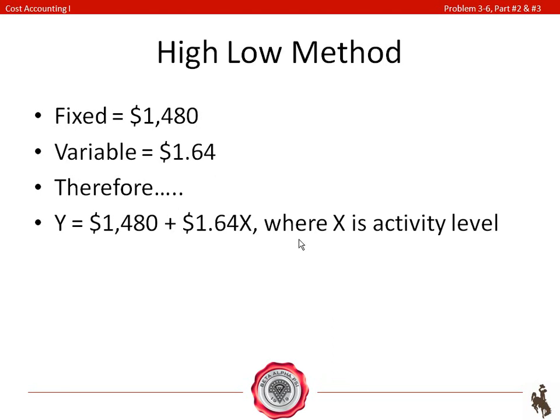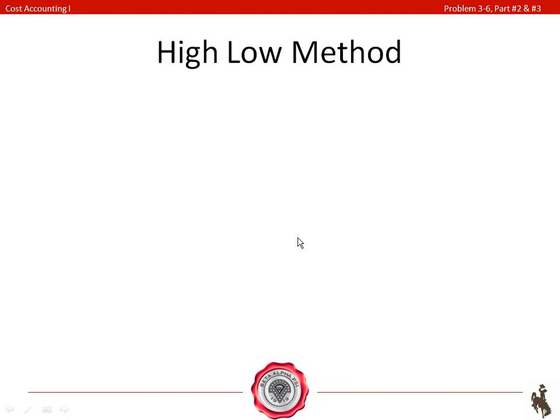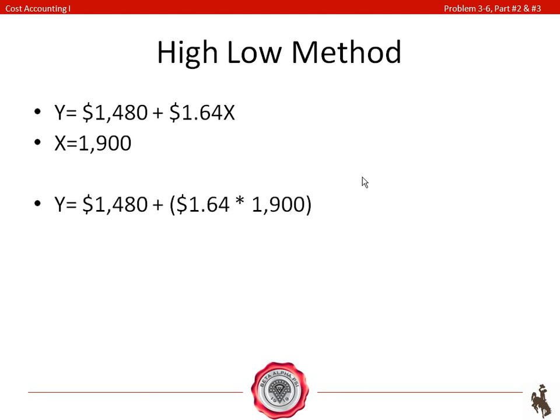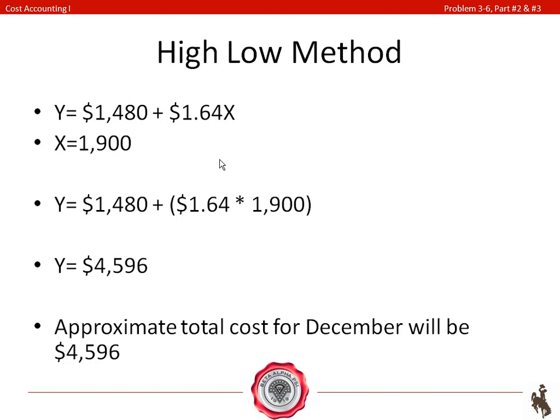The last part of this problem asks us to approximate the cost for December if there are 1,900 visits to the tanning salon. So, all you do is use your equation that you found of Y equals $1,480 plus $1.64X. And your X is going to be the 1,900 tanning visits. You just plug that right into your equation and you should get total cost for December of $4,596. It's important to remember that this is just an approximation of the cost for December.